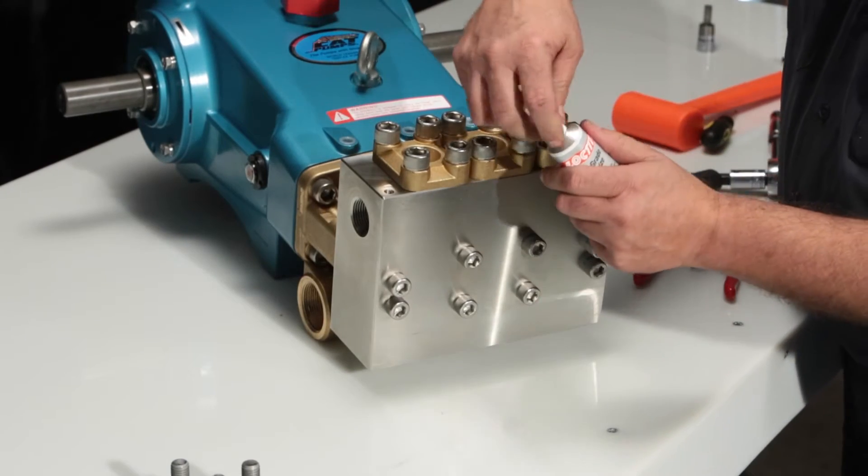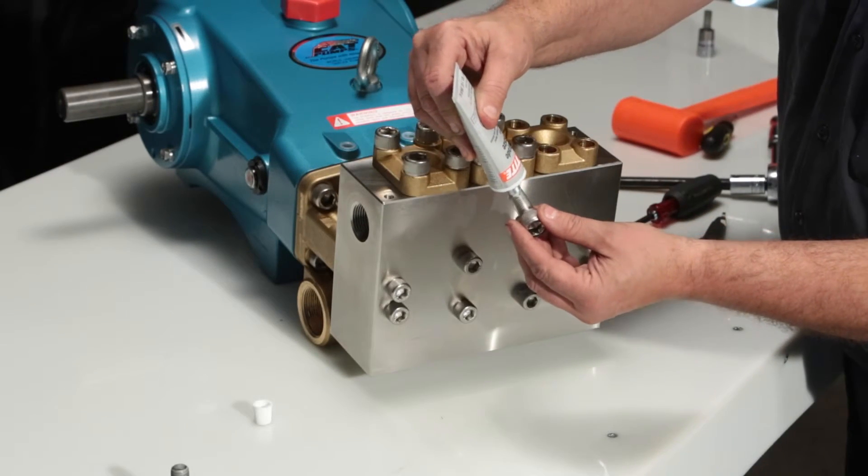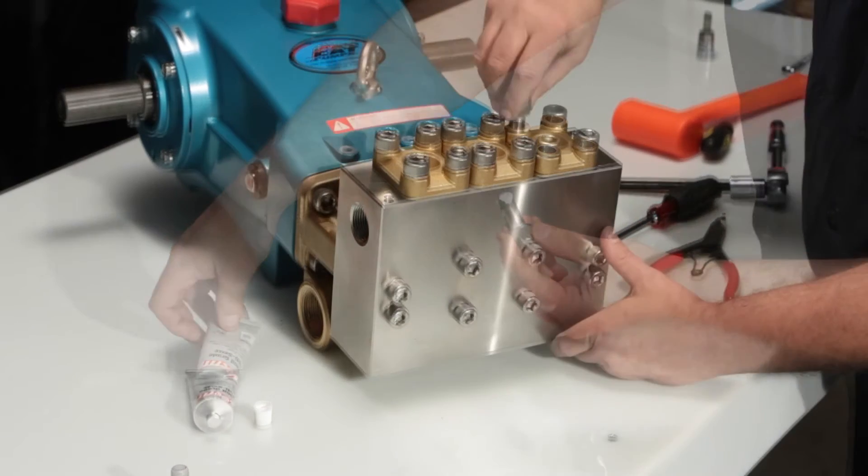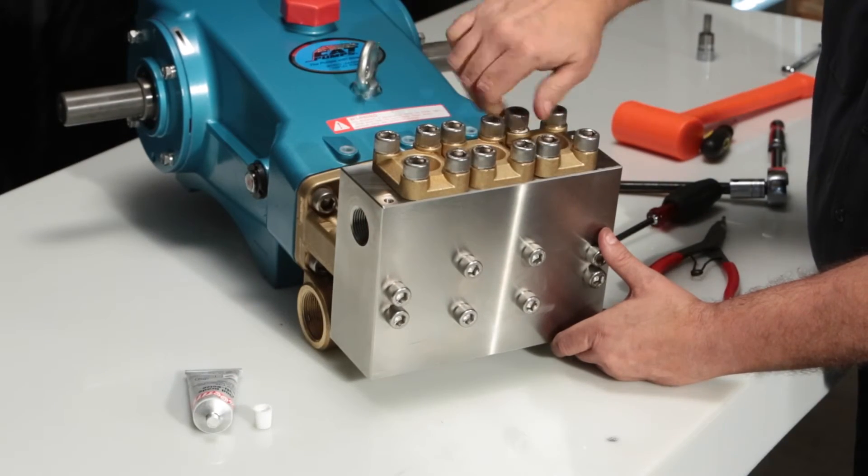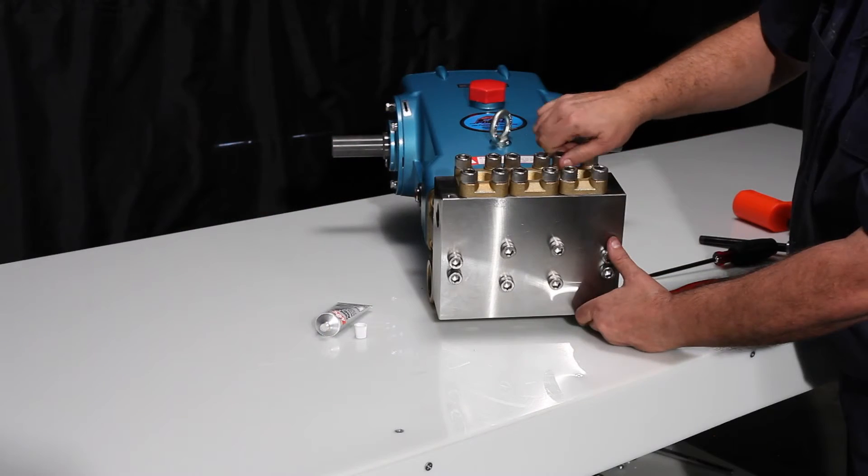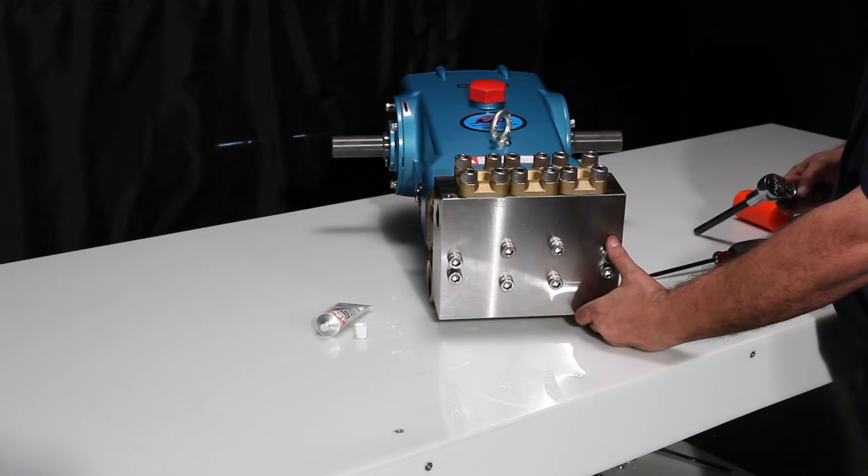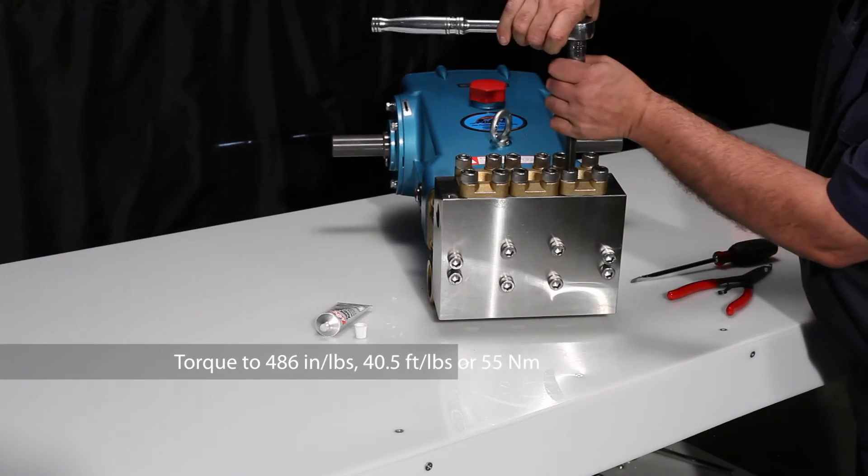Before installing the bolts, use anti-seize to reduce the chance of galling, as both surfaces are stainless steel. Torque to specification.